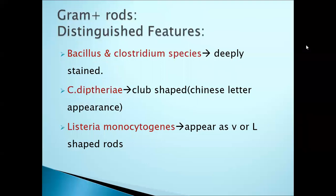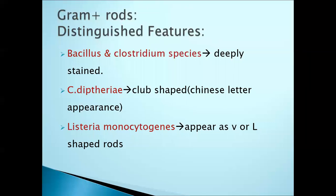What are the distinctive features of Corynebacterium diphtheriae? Bacillus species and Clostridium species are gram-positive bacilli which are deeply stained. Corynebacterium diphtheriae appears club-shaped or in Chinese-letter type arrangements. Listeria monocytogenes appears as L-shaped rods. These are some of the dominant features of these gram-positive bacilli.